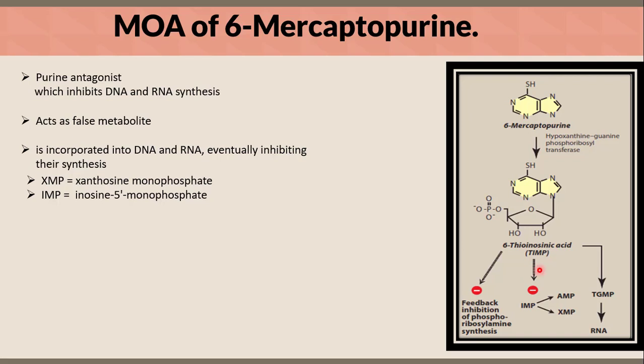As you can see here, 6-mercaptopurine is converted to 6-thioinosinic acid or TIMP, which inhibits the formation of IMP, or inosine monophosphate, which is converted to two important components: AMP and XMP.